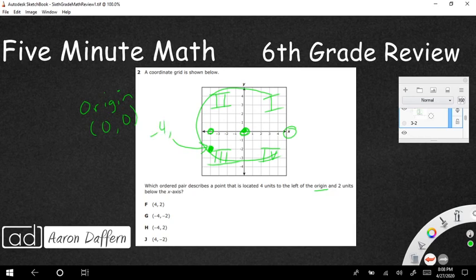They gave you the coordinates, negative four and negative two. The only trick is they said four units to the left, you would have to know that that is negative four. And two units below, you'd have to know that is negative two. But besides that fairly simple question, the answer is G. So that's it for tonight.